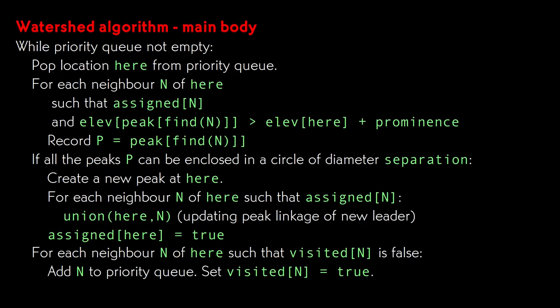There are not nearly as many details to worry about in the main body of the algorithm. It's actually quite straightforward. We pull a pixel off the priority queue and look for neighbors that have been assigned to peaks. We list all the neighbor peaks that are at least the prominence threshold above the current altitude. There may be none, one, or multiple ones. If there are multiple ones and they can't be enclosed in a circle whose diameter is the separation threshold, then we do nothing with the current pixel. It lies on a watershed. Otherwise, we merge the current pixel with all the neighboring peaks. Finally, all unprocessed neighbors get added back to the priority queue. Let's watch this run on the actual data.